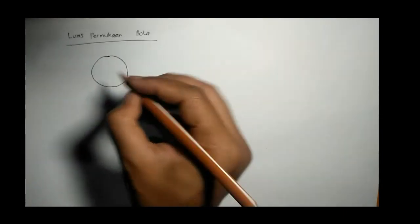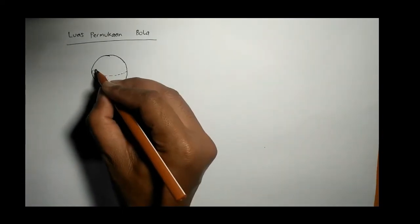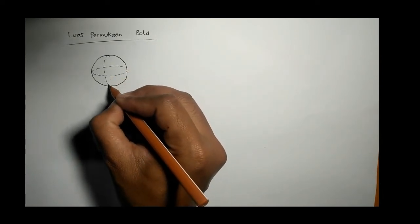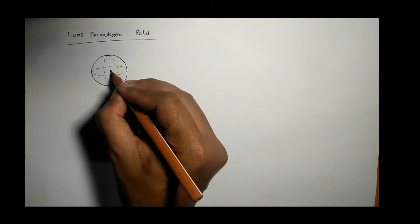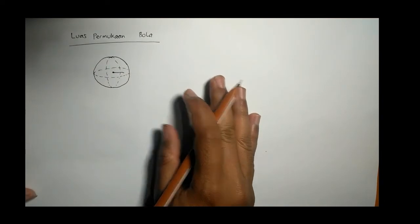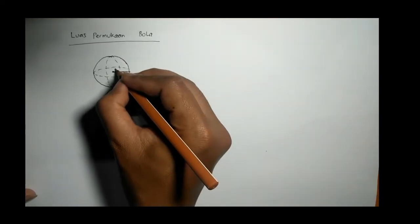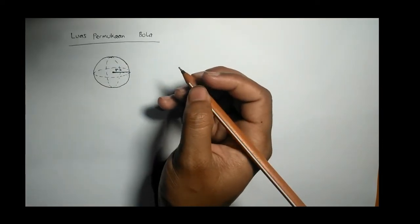Misalkan gambar bola seperti ini. Ini adalah garis bantu untuk memudahkan saja supaya ini mempunyai ruangan gitu loh, bukan lingkaran, membedakan dengan lingkaran gitu ya. Ini adalah jari-jari, jarak dari pusat ke tepi. Misalkan ini jari-jari. Oke.